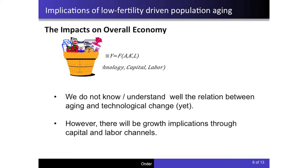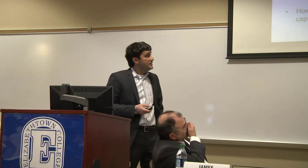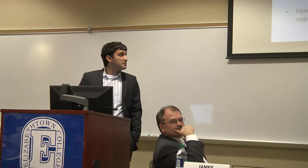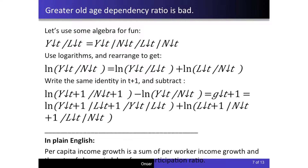We don't quite know what happens to total factor productivity A with an aging population. Capital is also important, but given time constraints I'll focus on the labor side. If we divide output by labor we get output per labor — and since in an economy output equals income, output per labor equals income per worker.